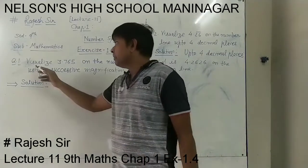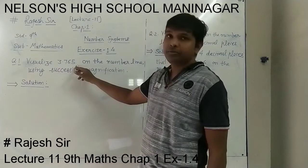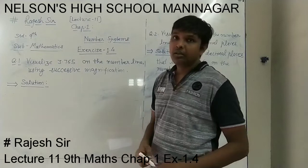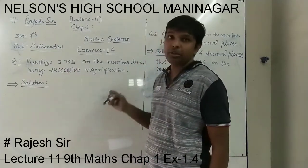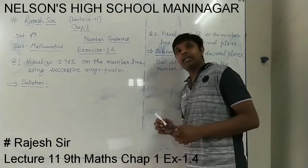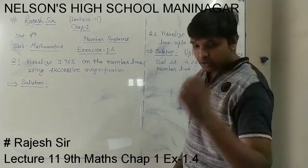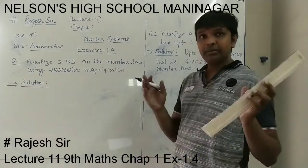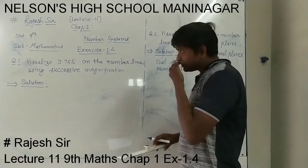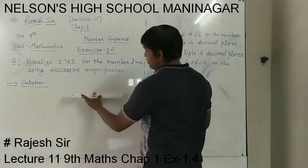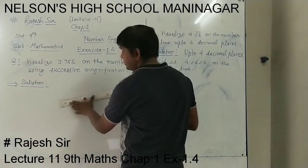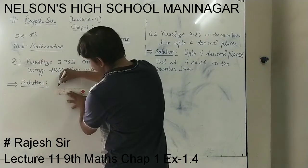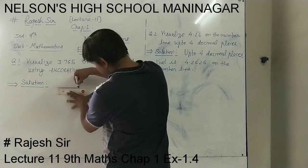In question 1, we have to visualize 3.765 on the number line using successive magnification. We want to show this number on the number line using successive magnification, dividing into 10 parts one by one. First we will draw a 10 cm line segment and drop it this way.